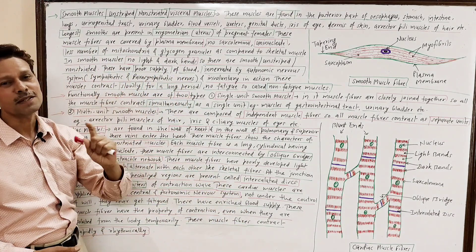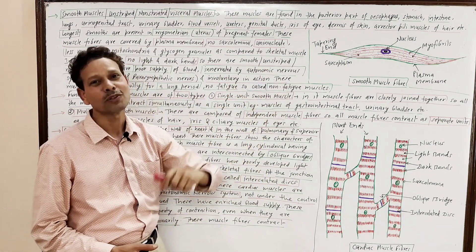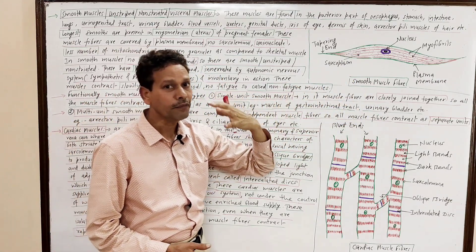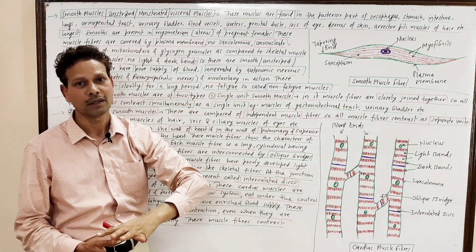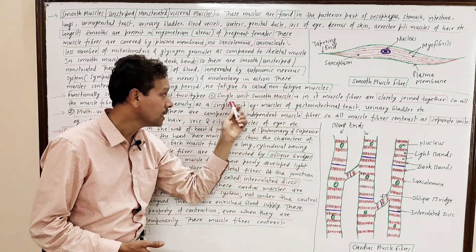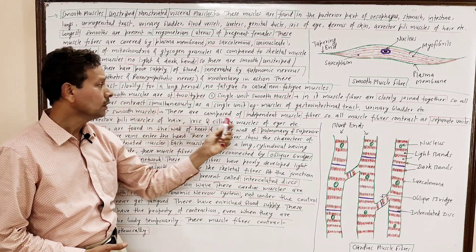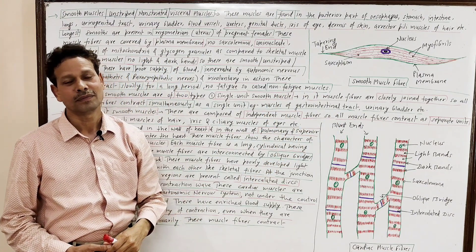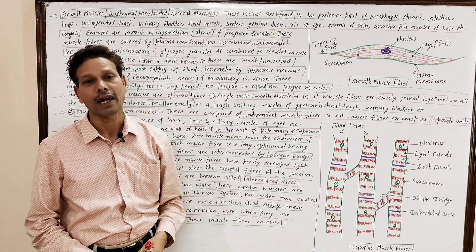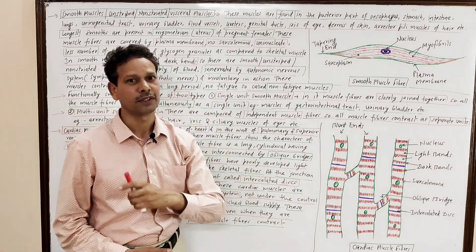Functionally, these smooth muscles are of two types. First: single unit smooth muscles. In this single unit, the different muscle fibers are closely joined together and they work as a single unit — meaning the different muscle fibers function simultaneously. For example, the muscles of the gastrointestinal tract — in the wall of the stomach, small intestine, and urinogenital tract — the muscle fibers work as a single unit.